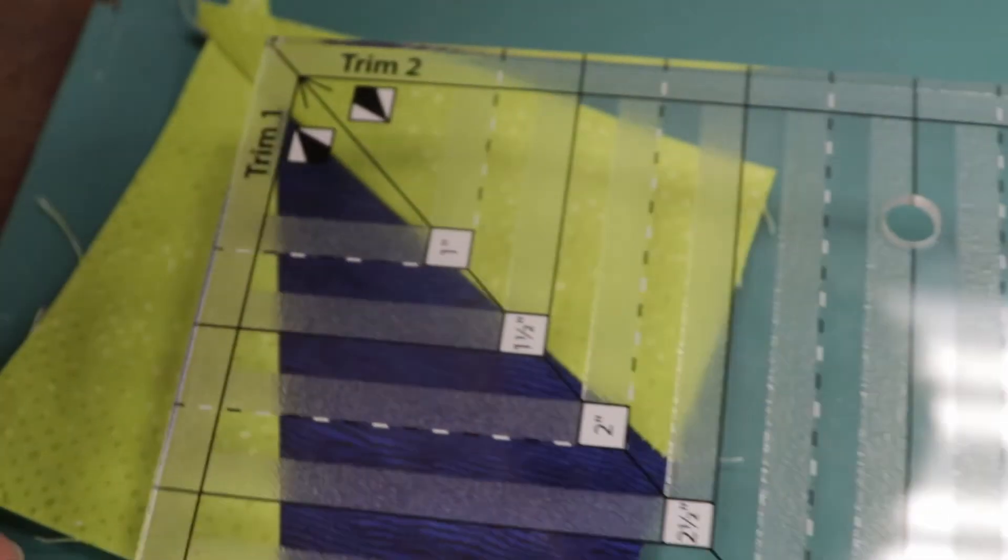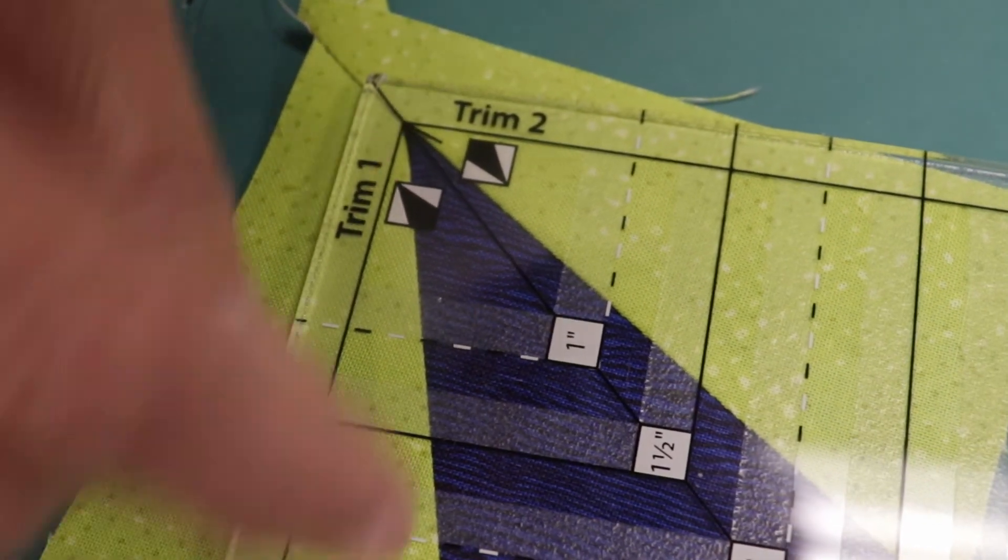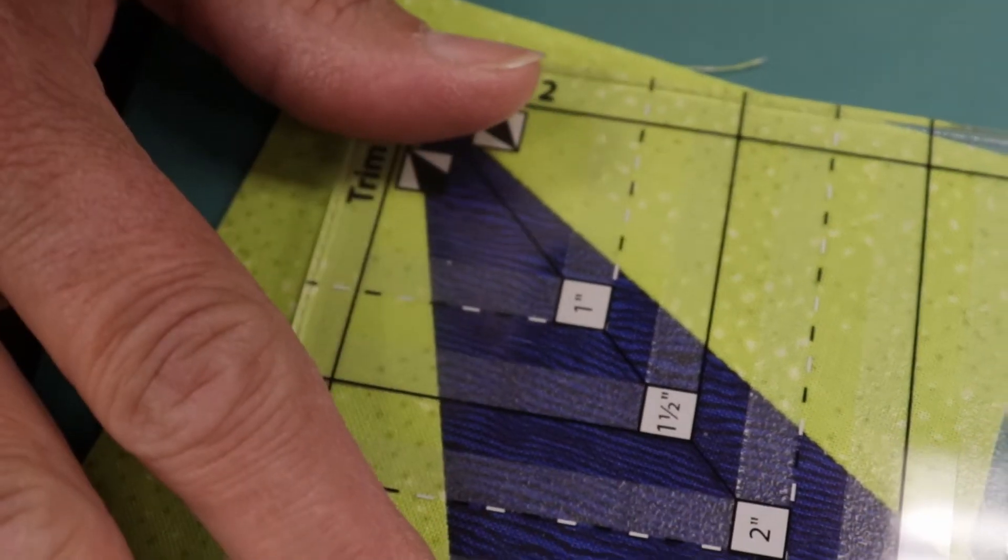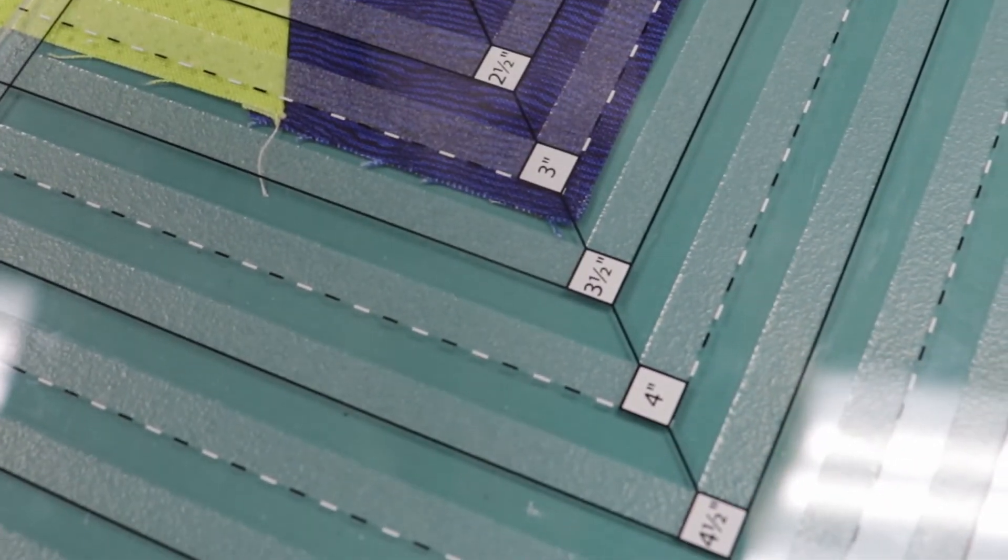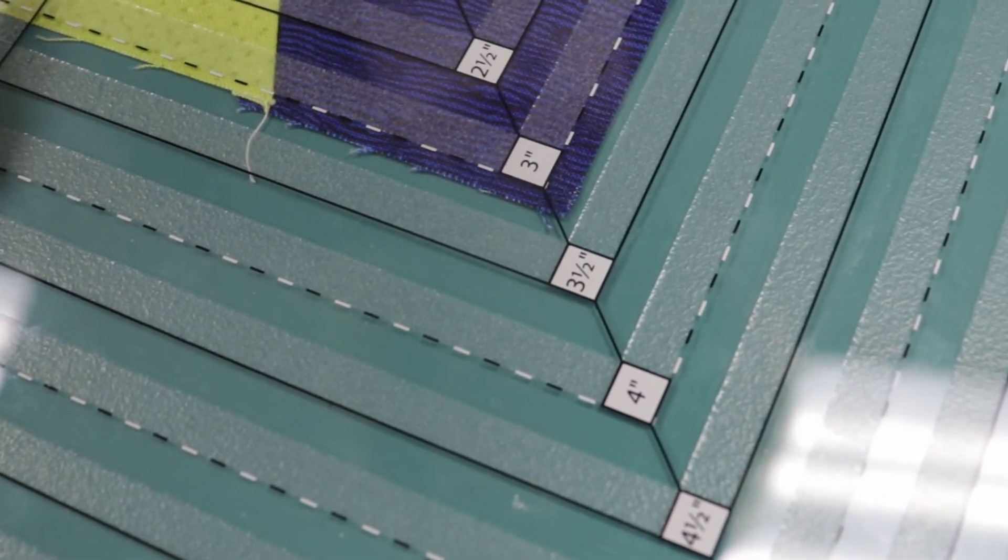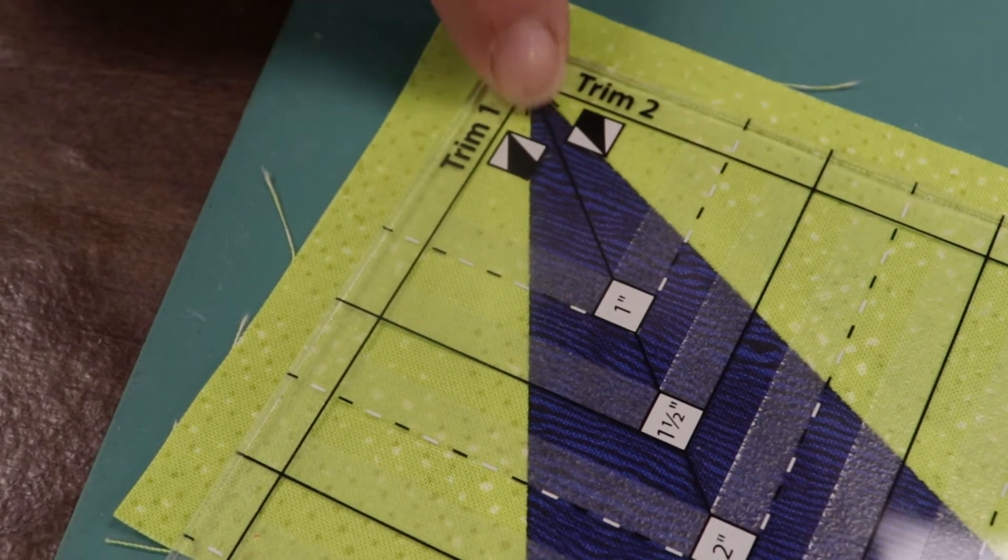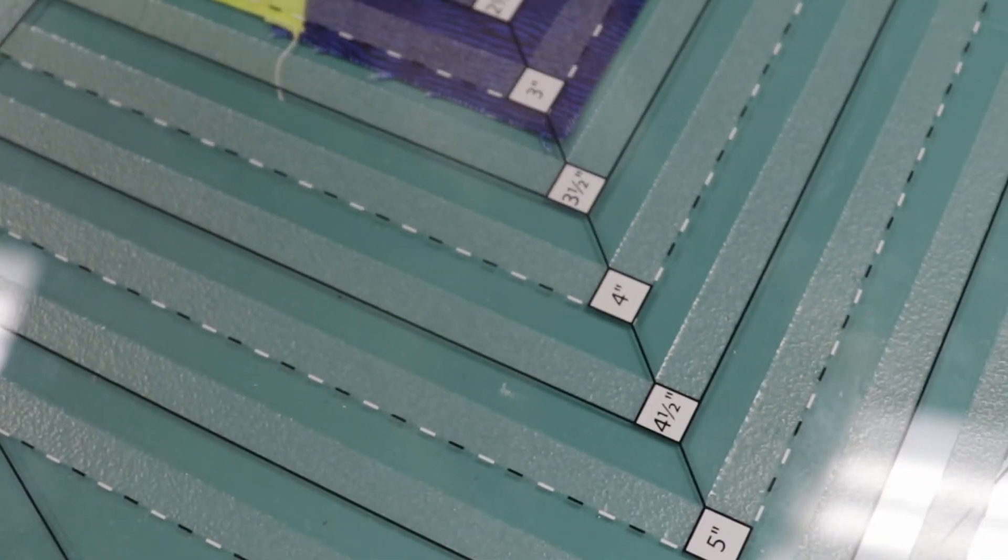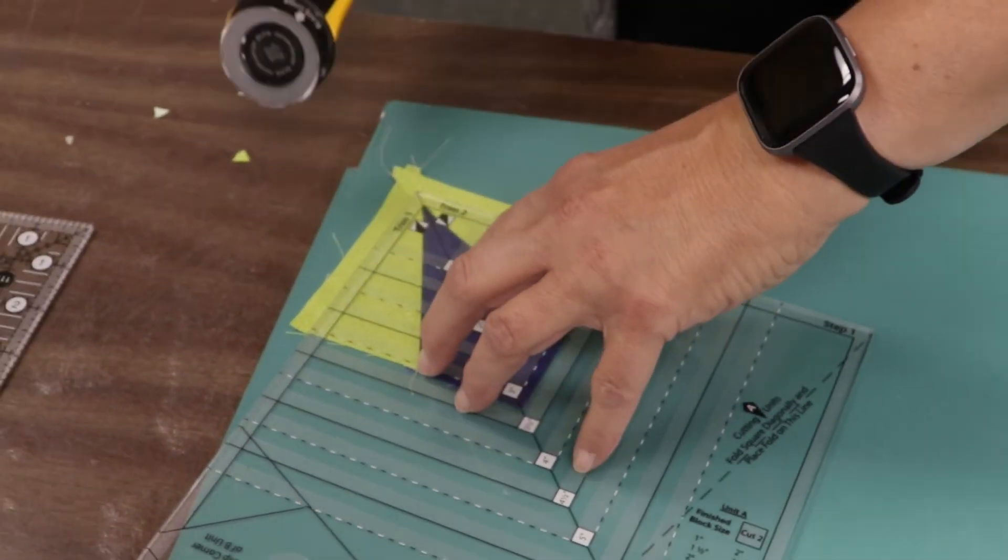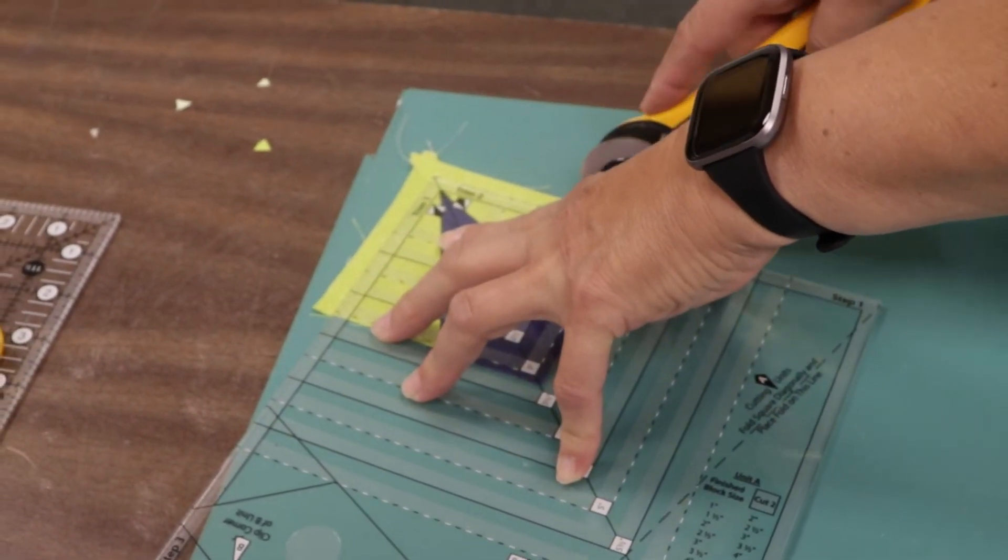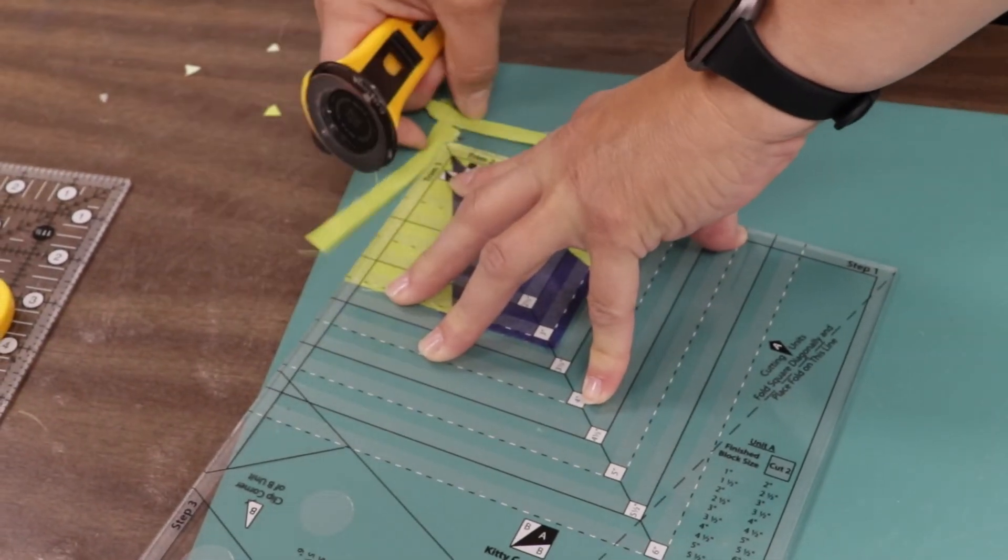This little arrow inside the seam allowance matches up with the point of our A unit. So we're going to put that right in the corner of our A unit, just like that, and make sure that this line is straight into the corner of our A. So let's line that up from here. It's in that little point straight down to the corner. Now we can go ahead and trim those two sides. Don't worry about anything else. Just match up the point and the line going into the corner.